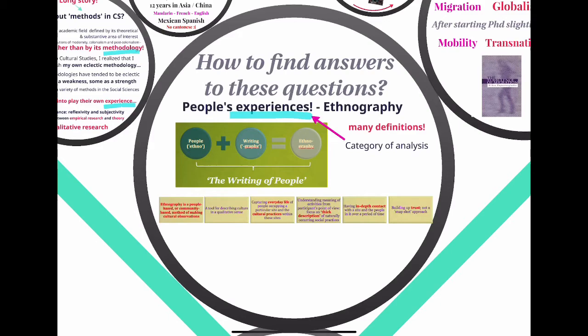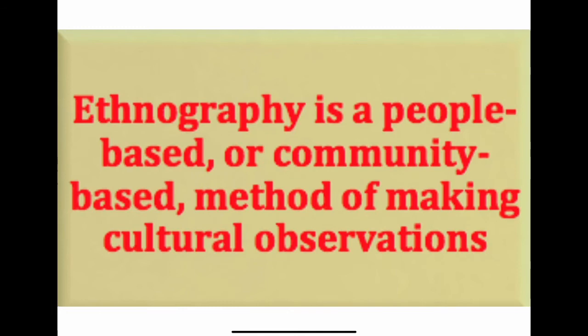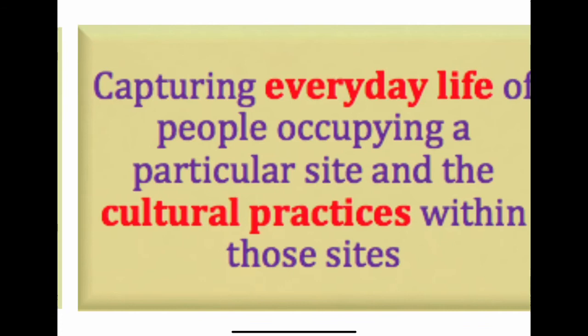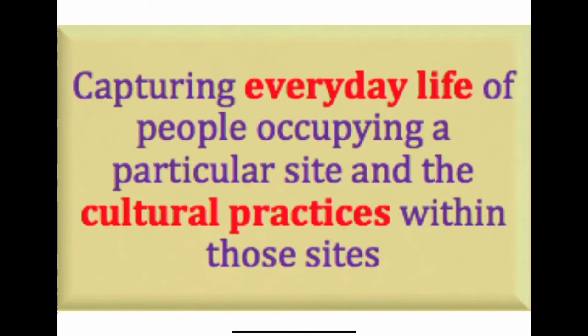Ethnography does six very important things. First, it is a people-based or community-based method for making cultural observations — it allows you to make cultural observations. Second, ethnography can be described as a tool for describing culture in a qualitative sense, not quantitative — looking at the experiences, emotions, feelings, ideas, and stories that people tell you. Third, ethnography helps you capture the everyday life of people occupying a particular site and the cultural practices within those sites.